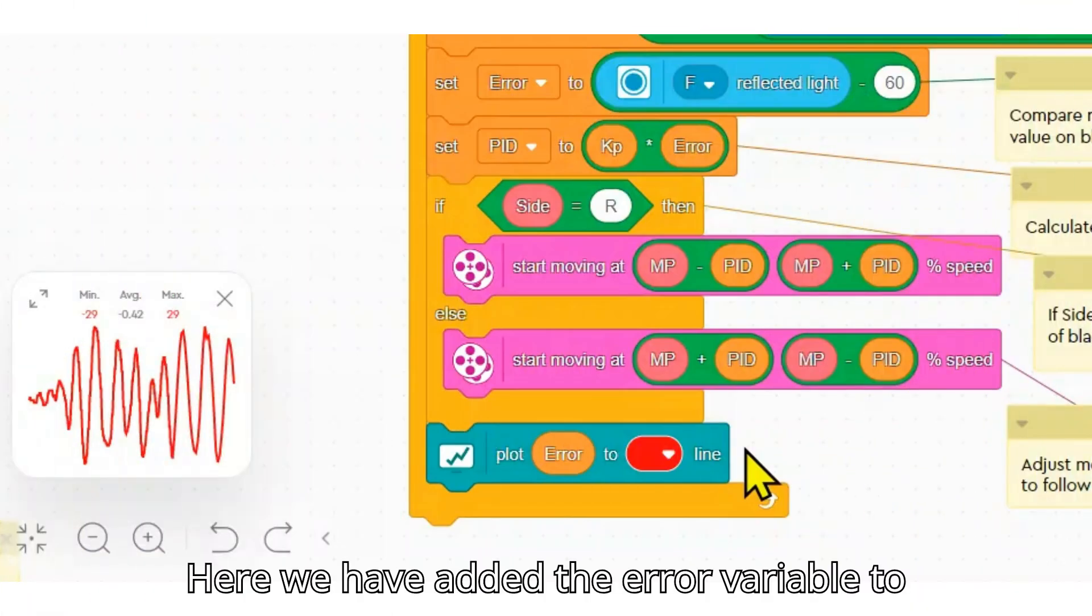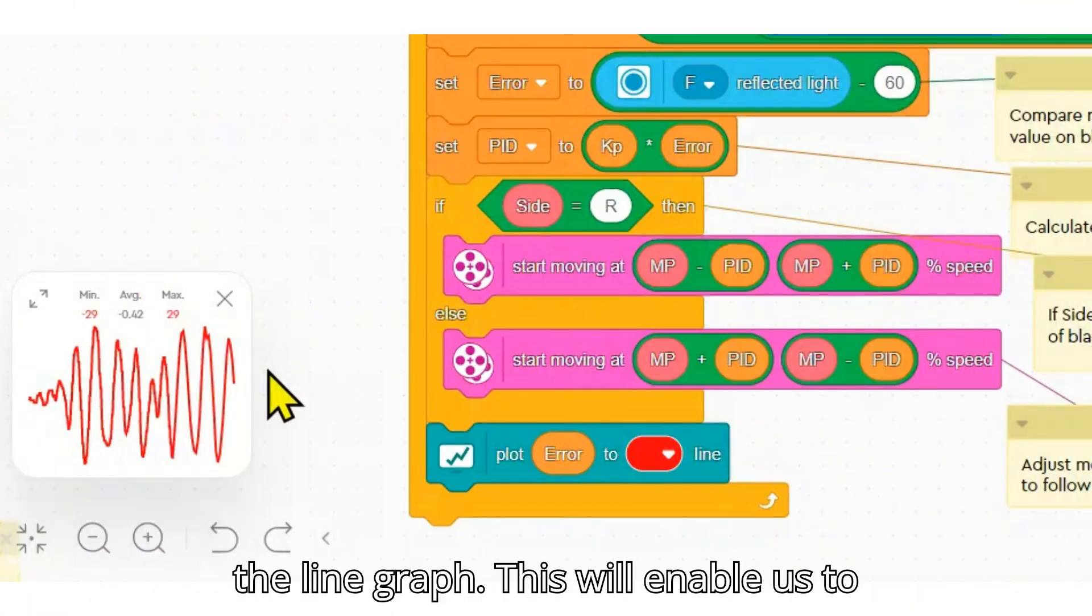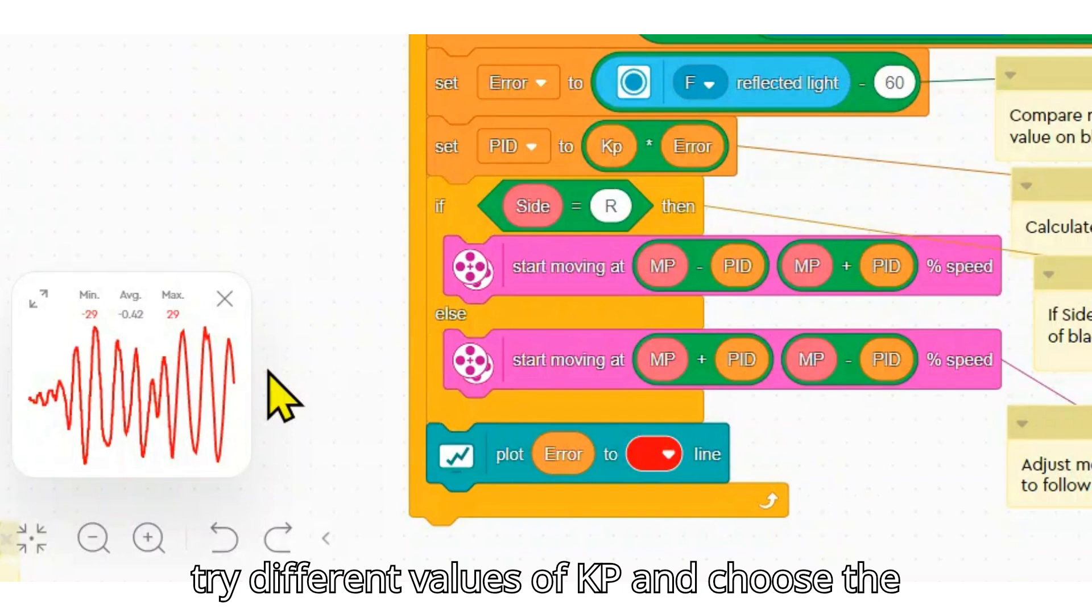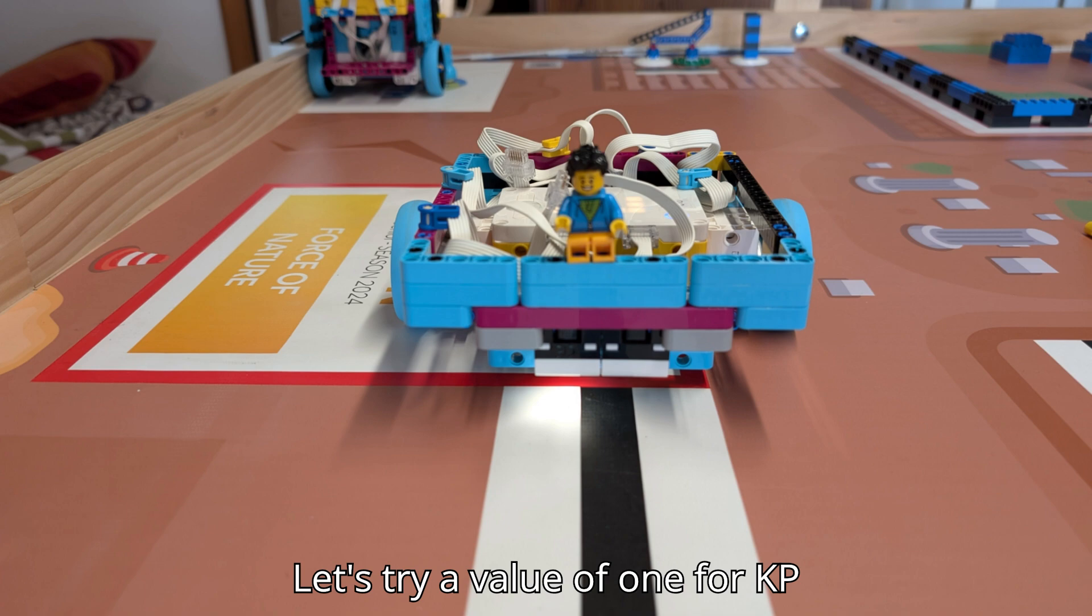Here we have added the error variable to the line graph. This will enable us to try different values of KP and choose the best value for our robot. Let's try a value of 1 for KP.